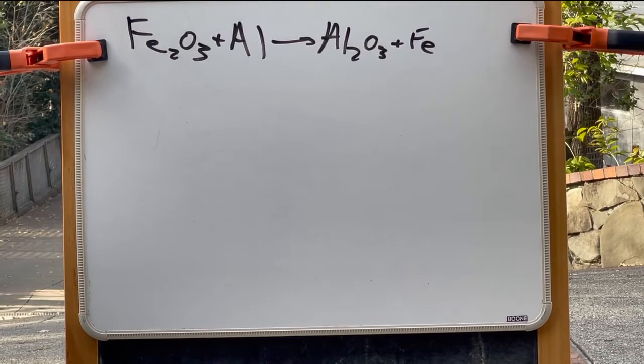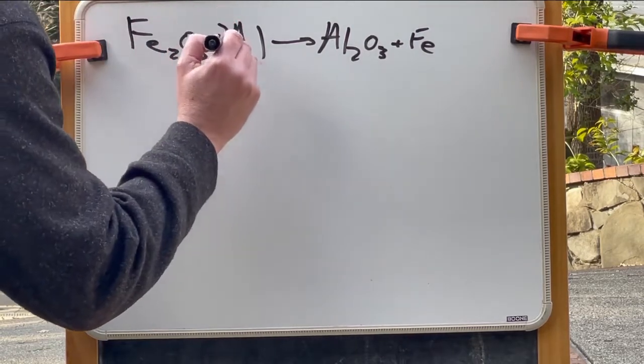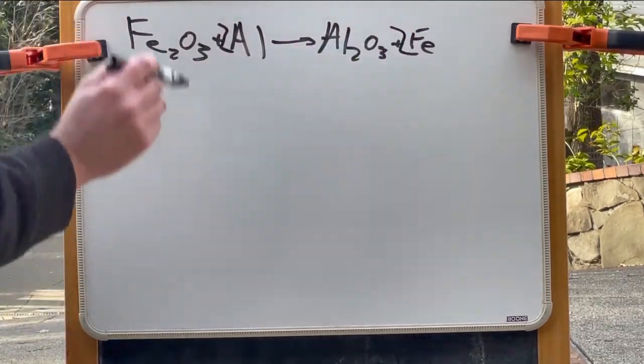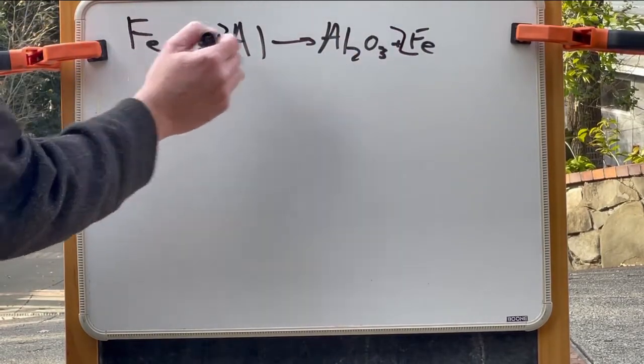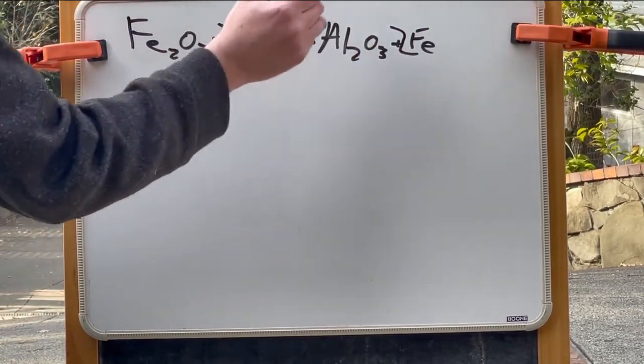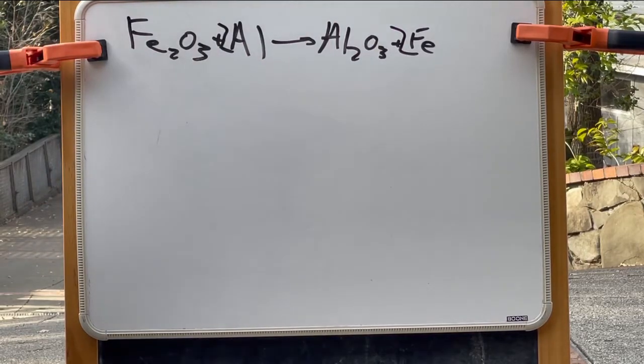Luckily this is an easy equation to balance. All we need to do is put two over here and two over here, and now we have two irons over here, two irons over here, three oxygen here, three oxygen here, two aluminum here, and two aluminum here. That is a balanced equation.